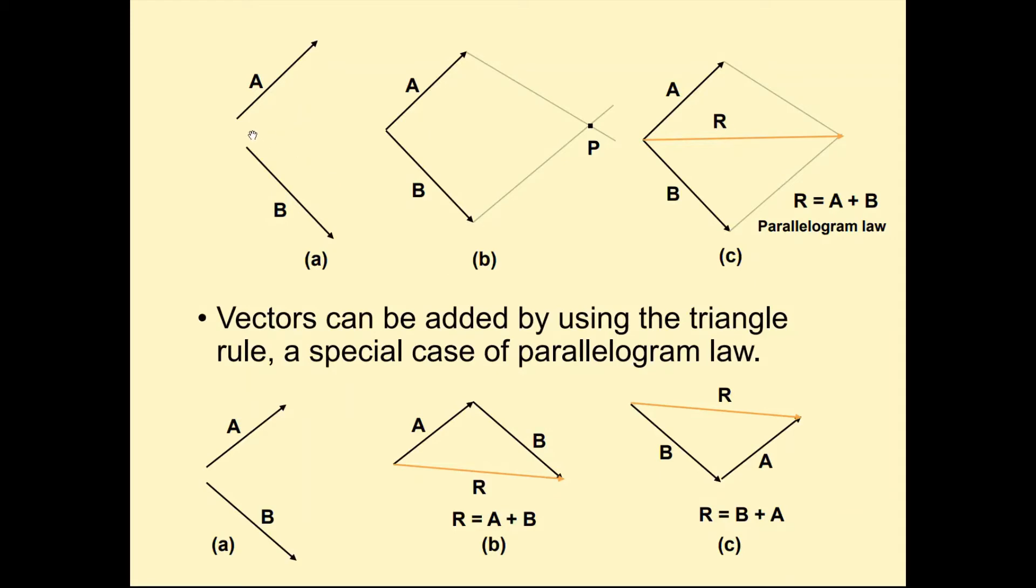If you have two components, A and B, you just need to join their tails to make them concurrent. From the tip of B, you're just going to draw a line that is parallel to A. The same with the tip of A, you're just going to draw a line that is parallel to B. The diagonal that forms in this parallelogram is going to be the resultant.